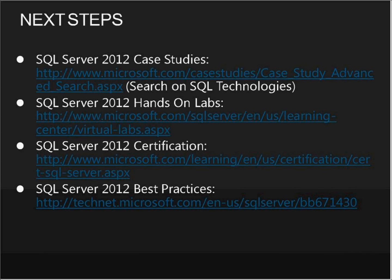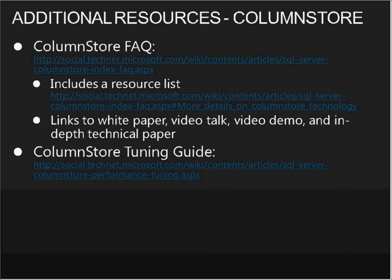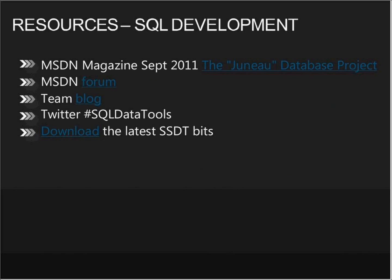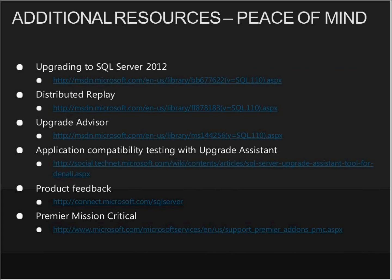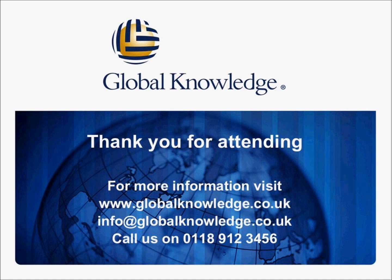Things you'll want to do: we've got case studies on how this stuff works so you can see what other people are doing. Hands-on labs so you can try this without downloading anything. Certification and best practices. Subsequent slides cover more on high availability, column store, the SQL development tools — Juno was the code name for the database tools before release — how to upgrade, how to get advice on Distributed Replay, what an Upgrade Advisor does, and what we're doing about big data. Thanks for listening.